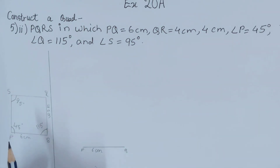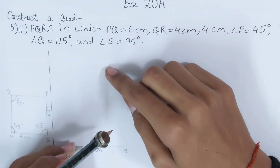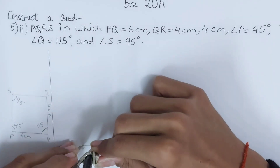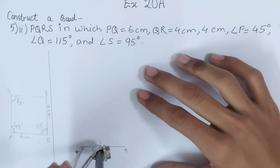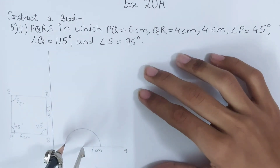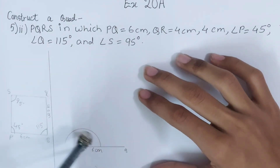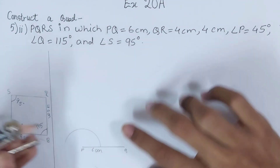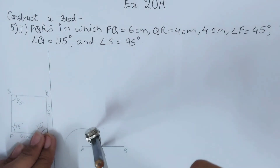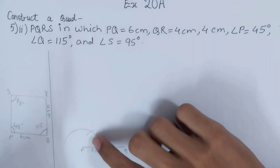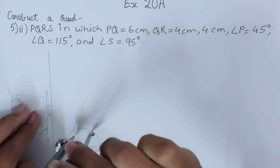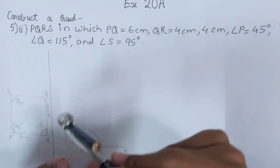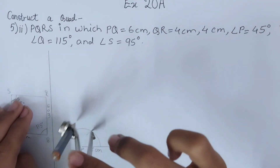We will begin with 45 degrees. First I'll keep my compass at point P. We know how to make 45 degrees — bisect 90 degrees. So we keep the compass here, open it to a suitable radius, and draw the arc. Keeping the compass at the point formed, I will cut another arc — this is 60 degrees from point P. Now another arc from this 60 degree point gives 120 degrees from point P. Now we will bisect it as well, keeping it at 60 degrees and cutting an arc above.